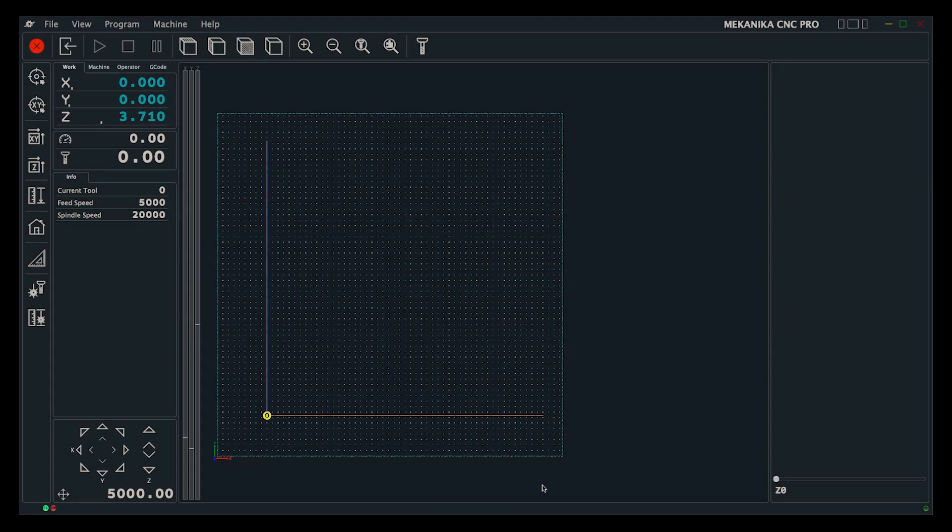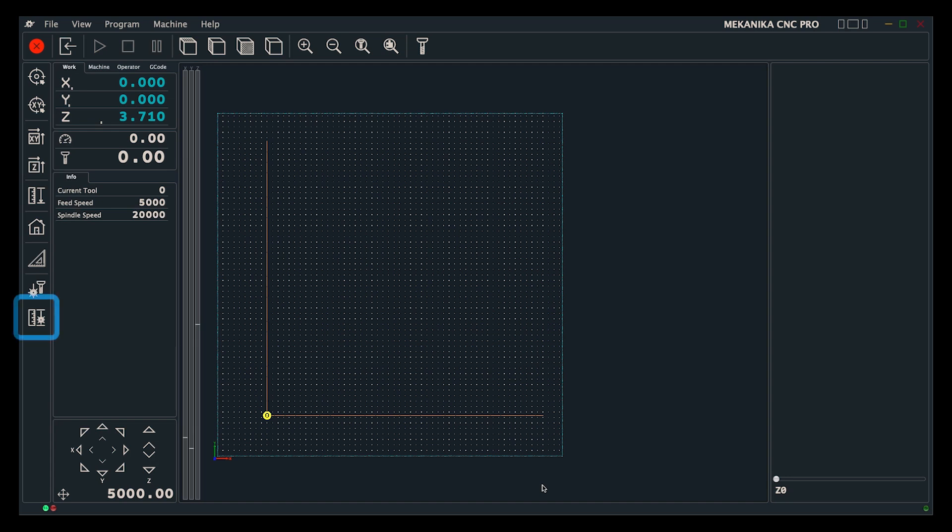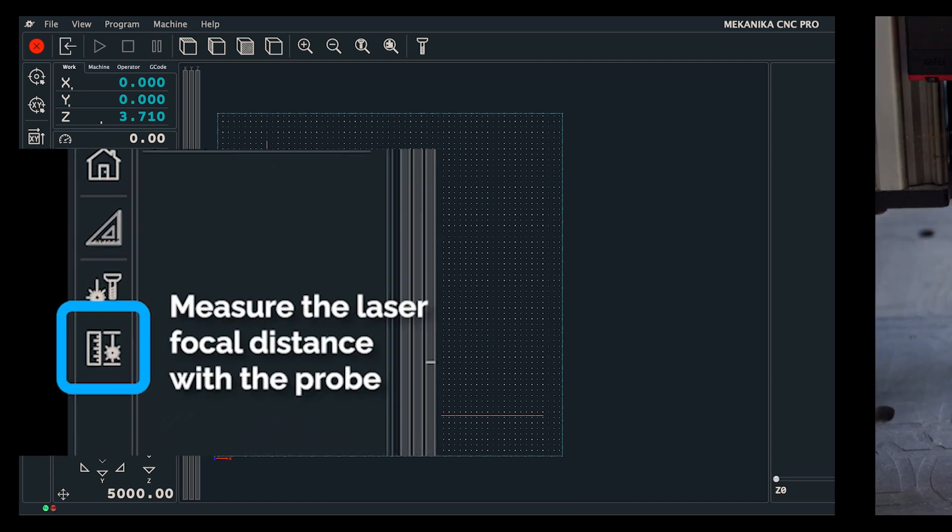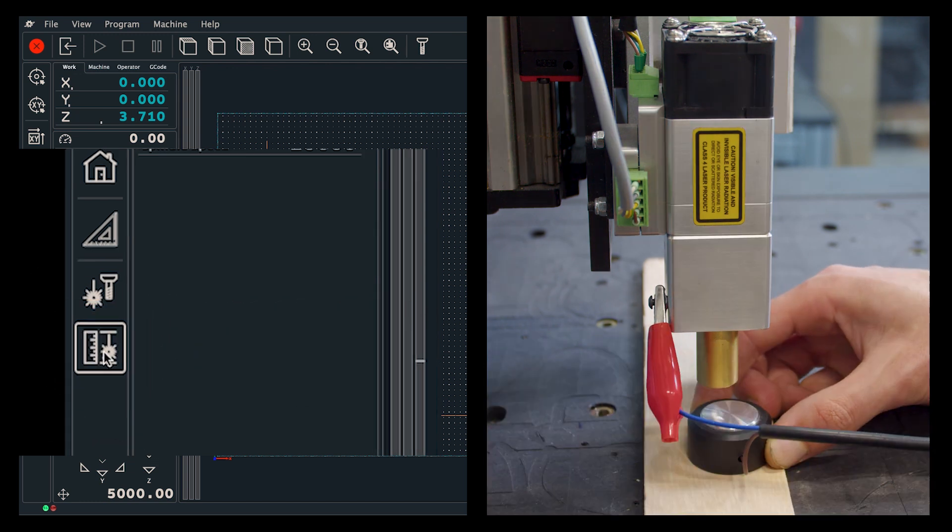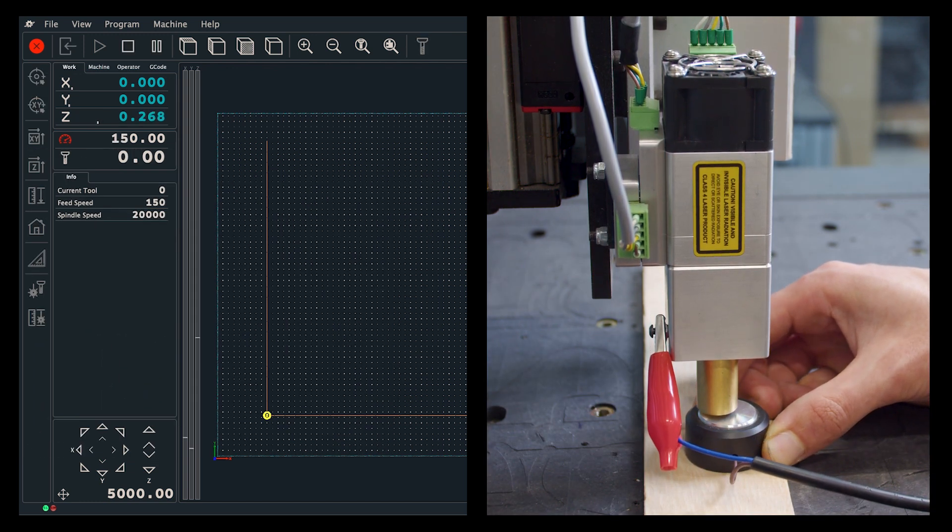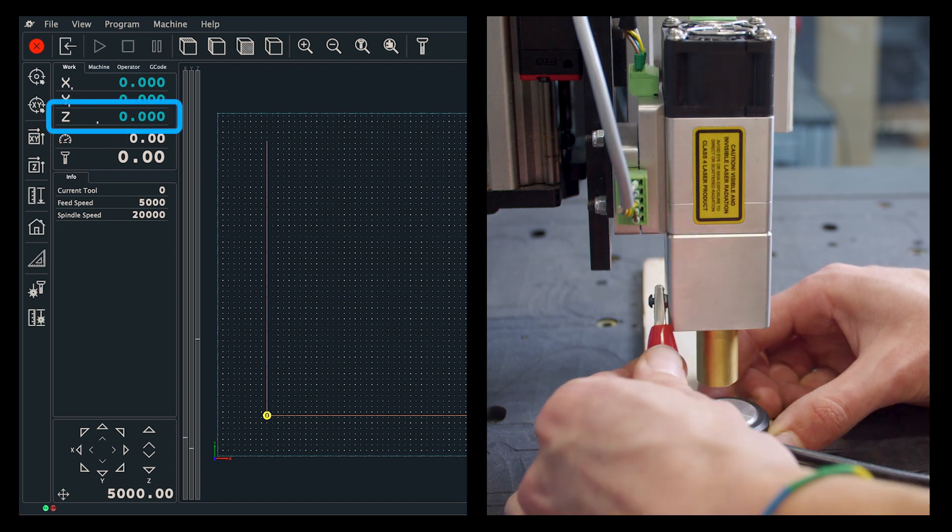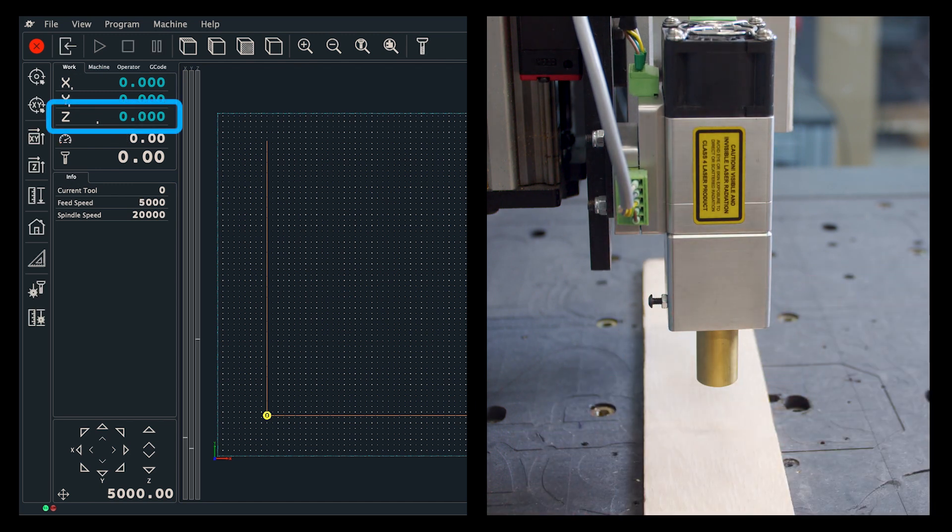The second button is very similar to the standard tool measure lens button. As for any other tool, attach the crocodile clip to the laser and press the button. When it touches the probe base, it will automatically move to the correct focal distance and set it to Z0.